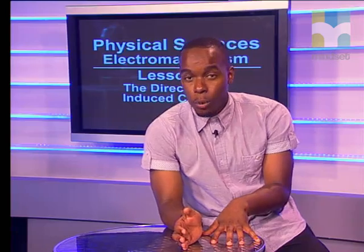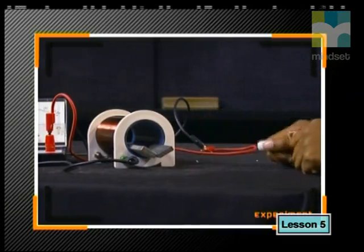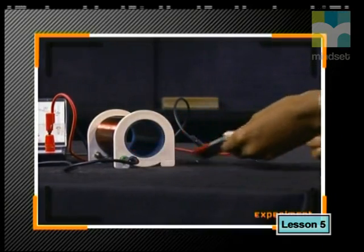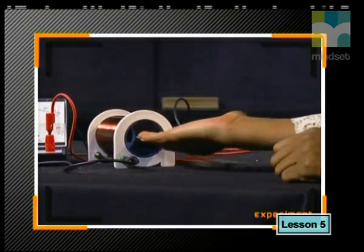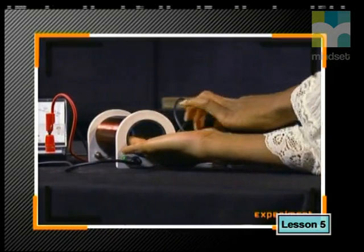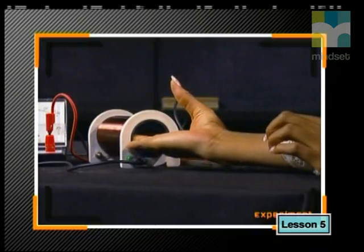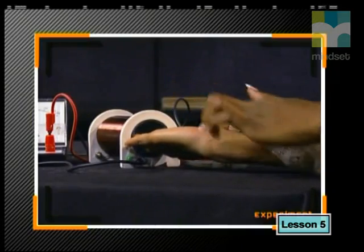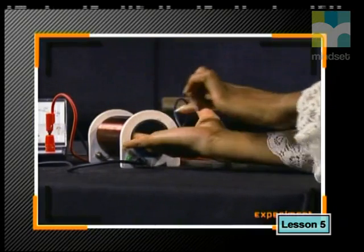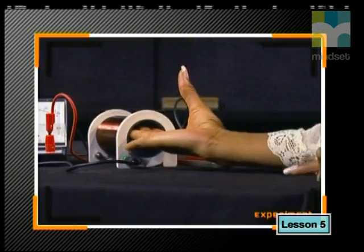The last thing to do today is to find the direction of the induced current. Keke will show us an easy way to determine the induced current direction. When a north pole enters a coil, the direction of the magnetic field is into the coil. In this case, we use the fingers of the right hand to point in the same direction. The induced current will move in the direction that the thumb can curl in. The thumb points to the right and can bend up, so the induced current moves in an anti-clockwise direction.